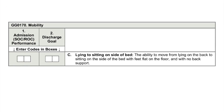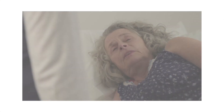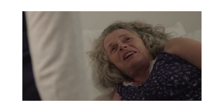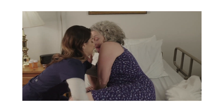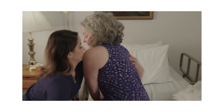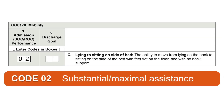The correct answer for Mrs. Brown's admission or start of care performance for GG0170C lying to sitting on side of bed is 02, substantial, maximal assistance. Mrs. Brown required the clinician to provide lifting and physical assistance that represents more than half of the effort to complete the activity of moving from lying on her back to sitting on the side of the bed. As a result you would code this item 02, substantial, maximal assistance.